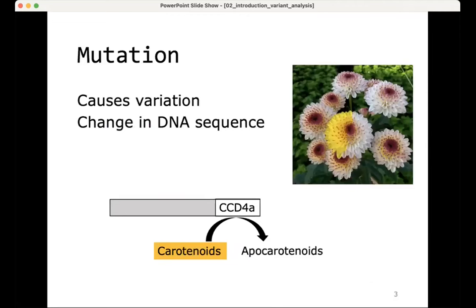Variation has to come from somewhere, and always a variation in the DNA is caused by a mutation — an event that at some point occurred, ended up in the reproductive cells of an organism, and became a germline mutation, so an inherited mutation. Many mutations do not have an effect on the phenotype at all, because they are not in genes or do not affect the amino acid sequence of the gene. But some of them do.